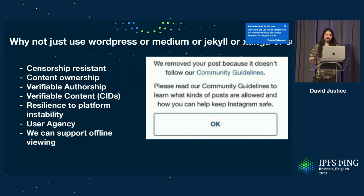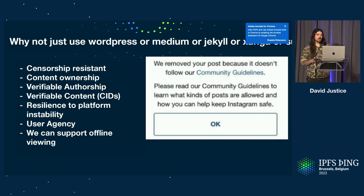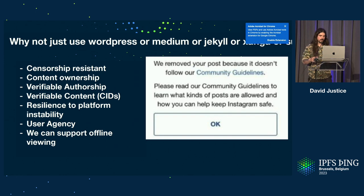So why didn't we just use a regular blog? We wanted something that's censorship resistant — not really a problem for us specifically, but in general that's a good thing for decentralized publishing. We want content ownership, verifiable authorship, and verifiable content with the CIDs since we're publishing on IPFS. And we want resilience to platform instability and user agency for the end users who are going to be consuming this information.